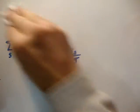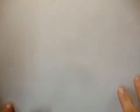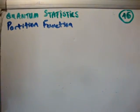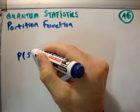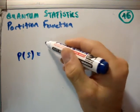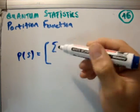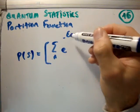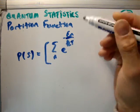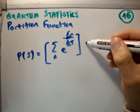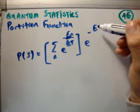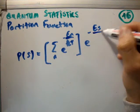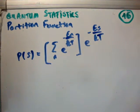Now that we know what the partition function is, we can now write down the full probability of an event occurring. So the probability of event s occurring is equal to the sum over n of e to the minus e sub n over kt, close bracket, times the Boltzmann factor. That's the probability of event s occurring.